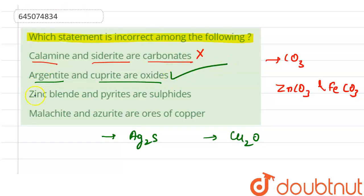Let us see option three. Zinc blend and pyrites—zinc blend and pyrites both belong to the sulfide group. Their chemical formula is ZnS (zinc sulfide) and FeS2. So this statement is also correct. This option is not correct.